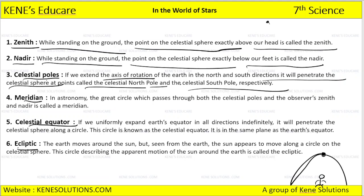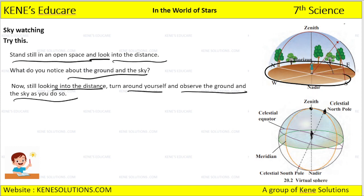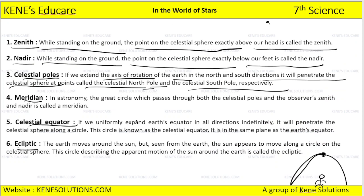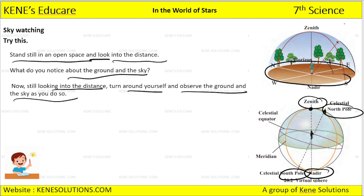If we consider the axis of rotation of earth in the north and south direction, we will get two poles — one is north and another is south. The point exactly at the top on our head is zenith, the point below is nadir. If we uniformly expand the earth's equator in all directions indefinitely, it will penetrate the celestial sphere along a circle — that is the celestial equator.